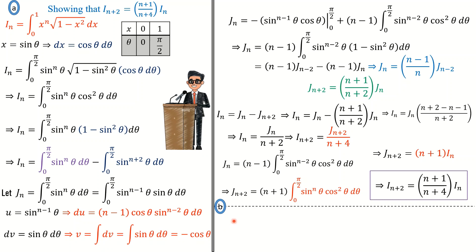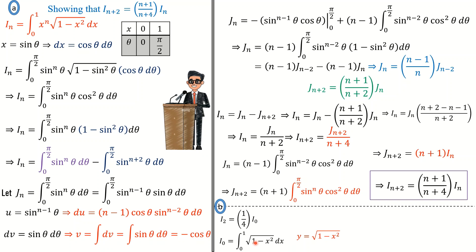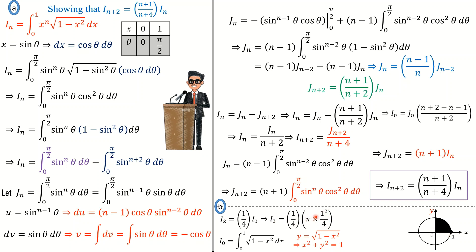The second part asks us to find I(2). Setting n equal to 0 in the recurrence gives I(2) equal to (1/4) times I(0). To find I(0), I set n to zero, giving the integral from 0 to 1 of the square root of 1 minus x squared dx. If I let y equal that function and square both sides, I get x squared plus y squared equals 1, which is a circle. Integrating from 0 to 1 gives the area of a quarter circle with radius 1, so I(0) equals π/4. Therefore I(2) equals π/16.